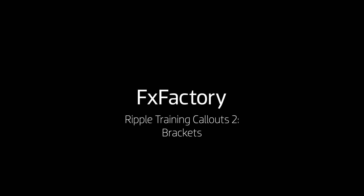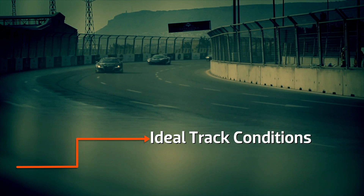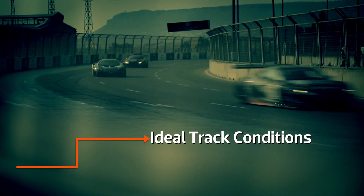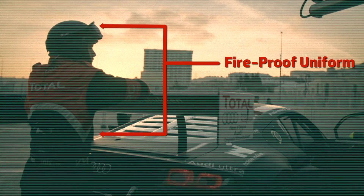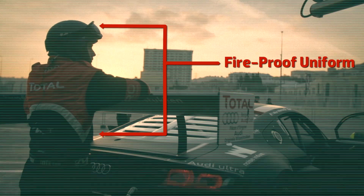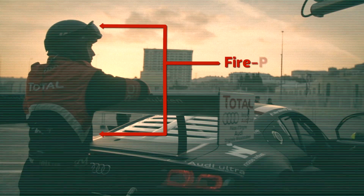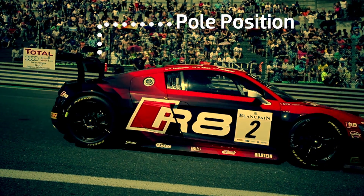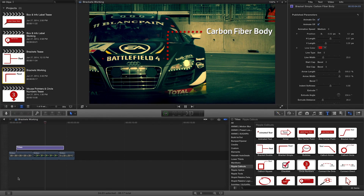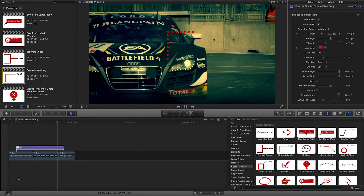In this quick tutorial, I'd like to show you the bracket effects in Ripple Training Callouts. Callouts are a set of animated effects that will give you some exciting ways to feature certain parts of your footage. Callouts are designed for use in Final Cut Pro X.